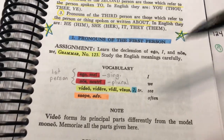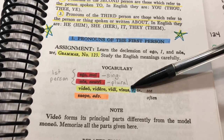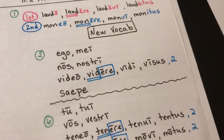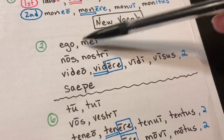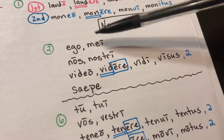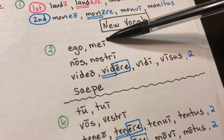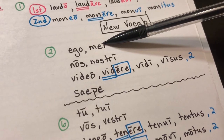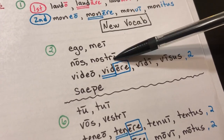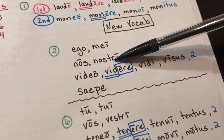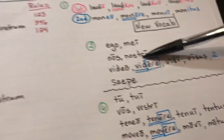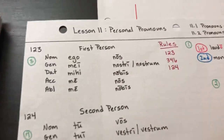Then we dived right into our new vocabulary — the personal pronouns. Because they replace nouns, their form looks a little bit like a noun: you'll see the nominative singular and the genitive singular of each version. Since these are totally brand new, we pulled out our grammar book and looked at rule 123 where these are mentioned.